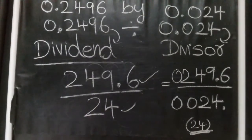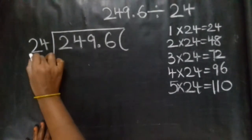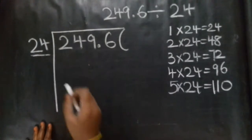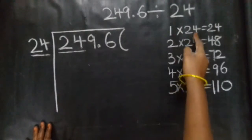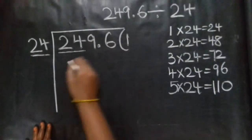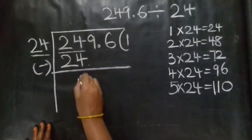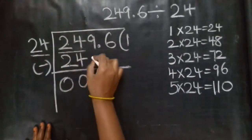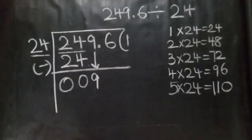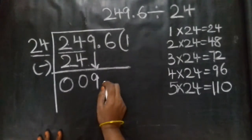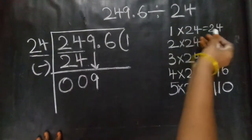So this time we proceed. Our divisor is a two-digit number — 24. First, look at the first two digits of the dividend. 24 goes into 24 one time — one times 24 is 24. Then subtract: 4 minus 4 is 0, 2 minus 2 is 0. The next digit to bring down is 9.